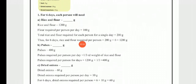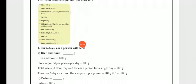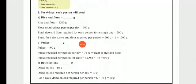For 6 days, each person will need rice and flour. For 1 day the total is 200 grams, so for 6 days: 200 × 6 = 1200 grams.